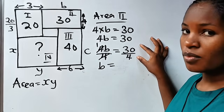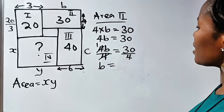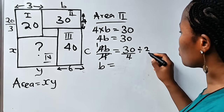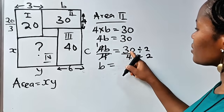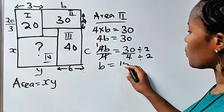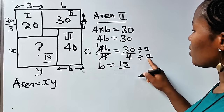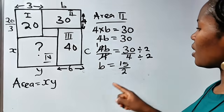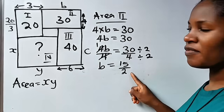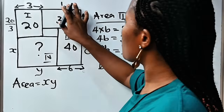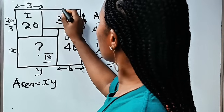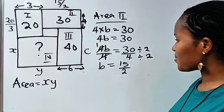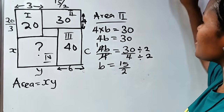We reduce this to its lowest terms by dividing numerator and denominator by 2. So 30 divided by 2 gives us 15, and 4 divided by 2 gives us 2. Therefore b is 15 divided by 2 — that is, b equals 15 over 2.